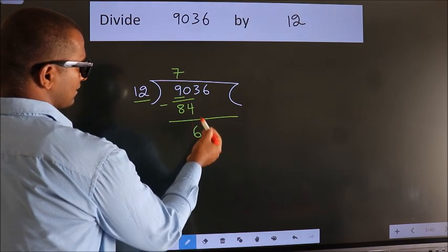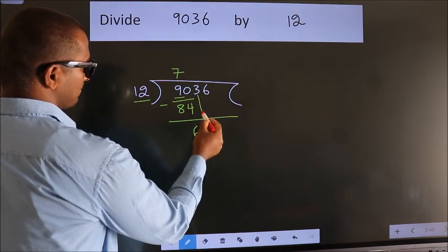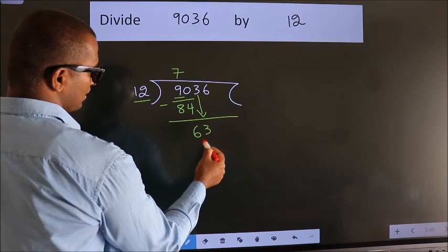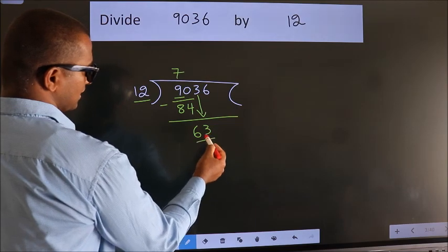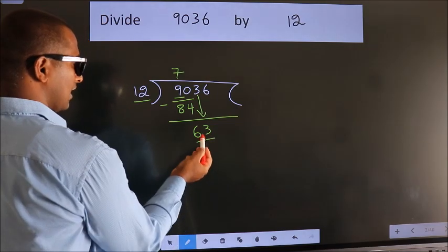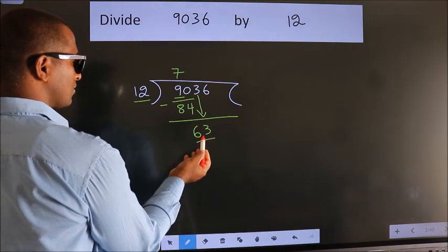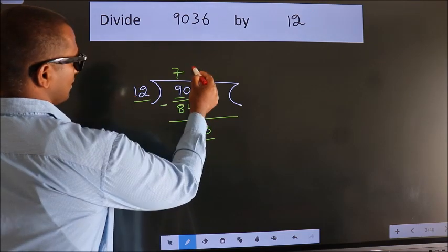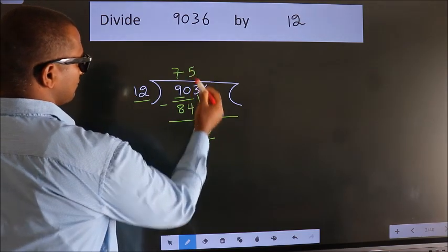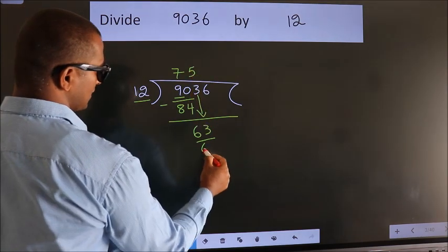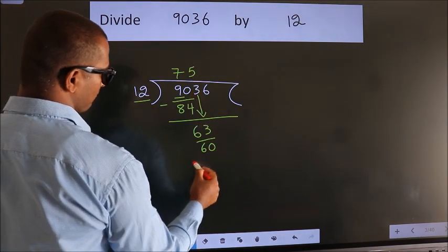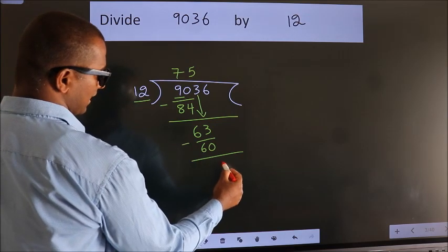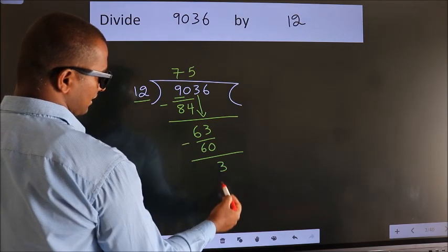After this, bring down the beside number — 3 down, so we have 63. A number close to 63 in the 12 times table is 12 fives, 60. Now we subtract. We get 3.